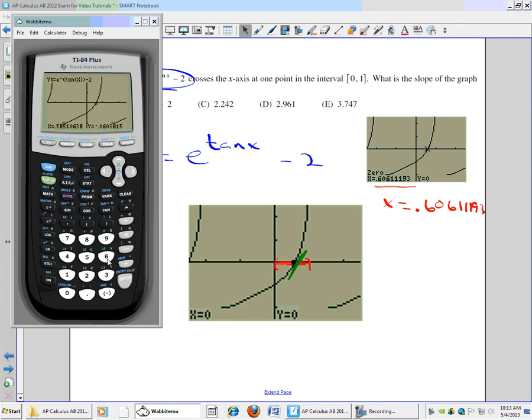But then we need to type in the point. And so we want 0.60611193. So that's what I'm going to type. Hit enter.